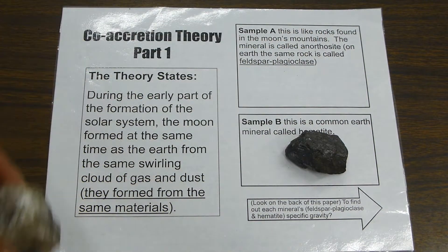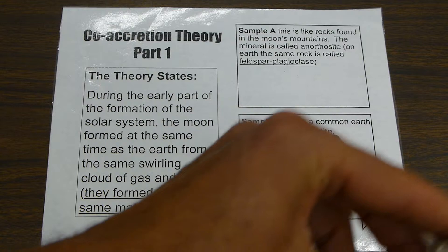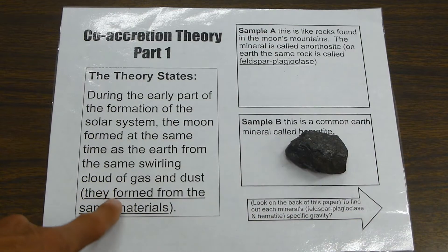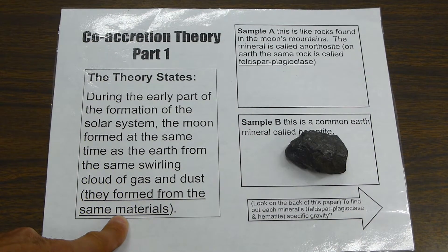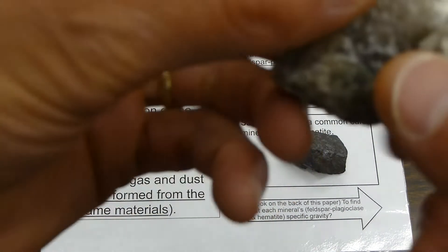This is the co-accretion theory, part 1, which says the materials that made up the moon and the earth formed from the same materials.